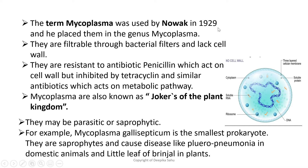This organism was later given the name Asterococcus mycoides. The term 'mycoplasma' was used by Nowak in 1929, who placed them in the genus Mycoplasma — this is very important for exams. They are filterable through bacterial filters and lack a cell wall, which is why they are not classified as bacteria. They are also resistant to the antibiotic penicillin, which acts on the cell wall.